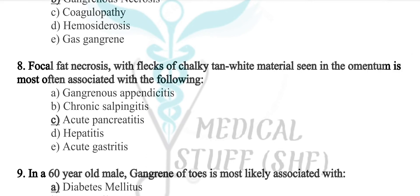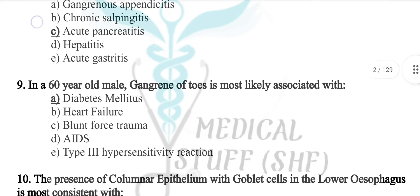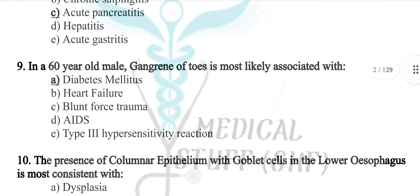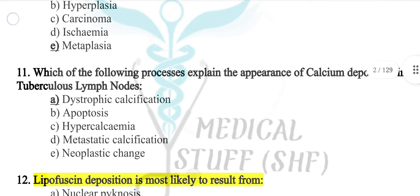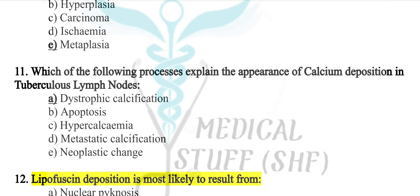Focal fat necrosis with flecks of chalky white material seen in the omentum is most often associated with acute pancreatitis. In a 60-year-old male, gangrene of a limb is most likely associated with diabetes. The presence of columnar epithelium with goblet cells in the lower esophagus is most consistent with metaplasia.